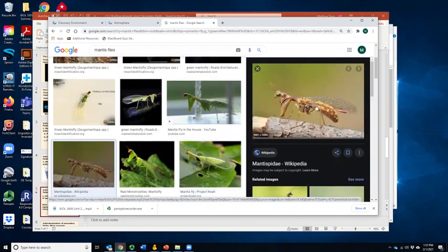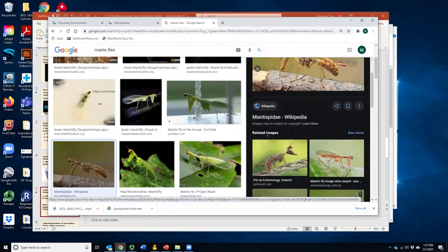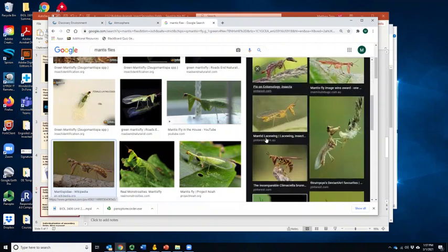And some of them are wasp mimics, like this guy. Some of them are green lacewing mimics. So here we have a really cool example of convergence, where we have raptorial forelegs that have evolved independently in different groups. And so we could look and say, hey, are they using the same genes? Are they using different genes? And we might expect some overlap of similarity, but probably significant difference since it arose independently.